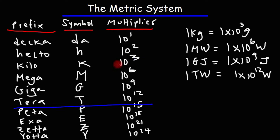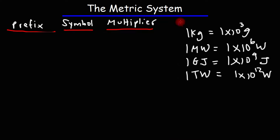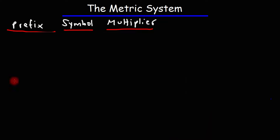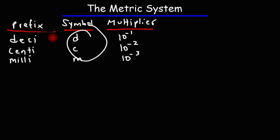Now let's go over the multipliers that have a negative exponent — this is the other half. Let's start with the prefix deci, represented by lowercase d. Deci is 10 to the minus 1. Next, we have centi, lowercase c — that's 10 to the negative 2. And then milli, lowercase m, is 10 to the minus 3. The only time you have a capital symbol is mega and above — mega, giga, tera, and anything above that. Everything else, the symbols are lowercase.